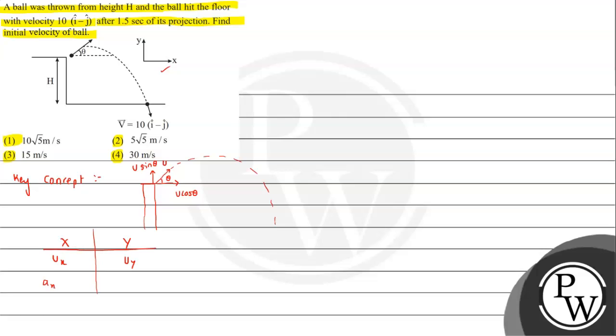Along Y, we can say acceleration is minus g. So here for the motion along Y axis, we can apply equations of motion because this is a constant deceleration case. Velocity is continuously decelerated by acceleration due to gravity. So this basic understanding we need to have.